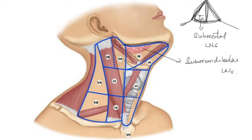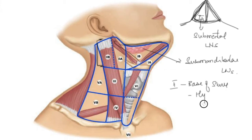Next, moving to Level 2 — divided into 2A and 2B. Level 2 extends from the base of the skull superiorly to the level of the hyoid inferiorly. Anteriorly the boundary is the stylohyoid muscle, coming down from the styloid process. Posteriorly it is the posterior border of the sternocleidomastoid.